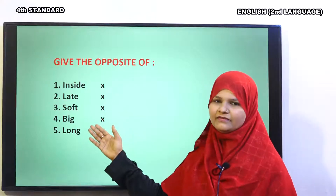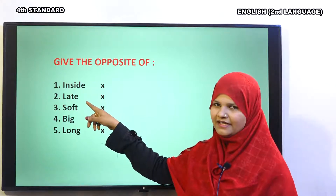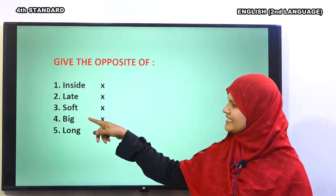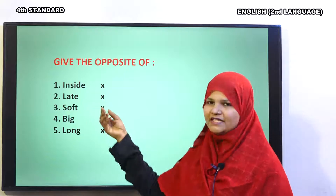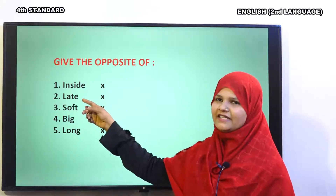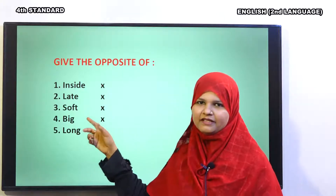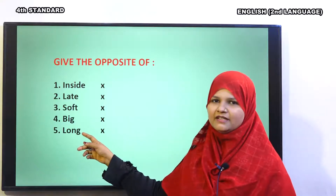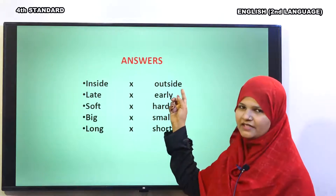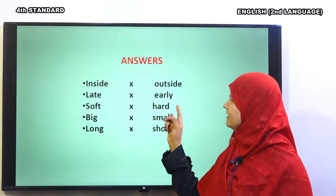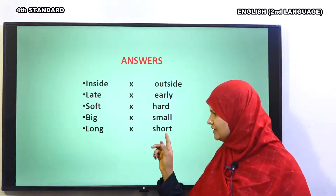The words are: first one is inside, second is late, third one is soft, next is big, and another one is long. Let us know the meaning of these words. Inside means andar. Late yaane bahot derse. Soft yaane narm. Big yaane bada. Long yaane lamba. So, the opposites of these words are: inside — outside, late — early, soft — hard, big — small, long — short.